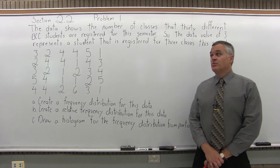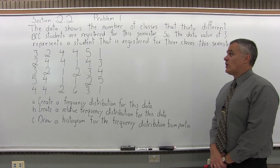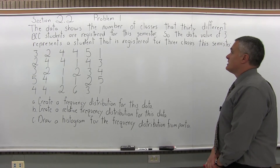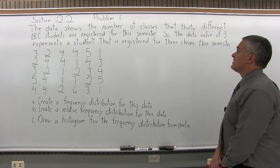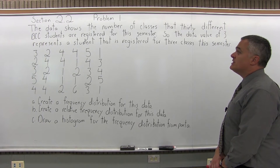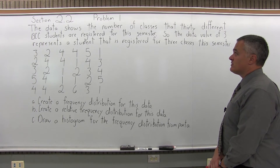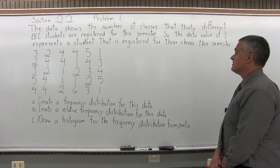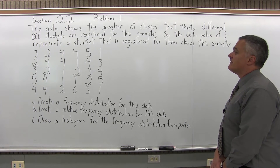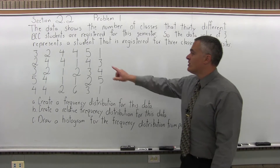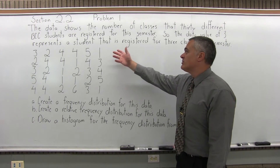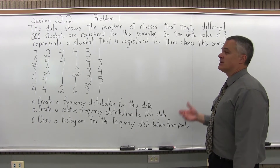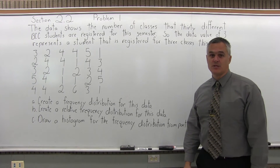This is Section 2.2, Problem 1. The data shows the number of classes that 30 different BCC students are registered for this semester. So the data value of 3 represents a student that's registered for 3 classes this semester.